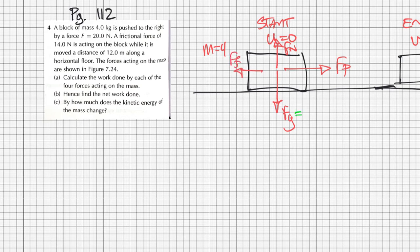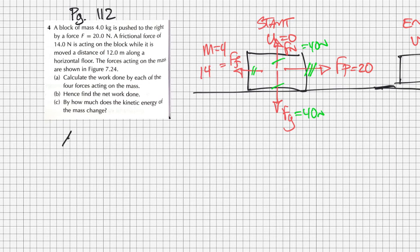The force of gravity would be basically 40 newtons. The normal force would also be 40 newtons — those two forces have to cancel out. There are no other forces in the Y direction, and the block is moving horizontally, so the net force in the Y direction has to be zero. The pull force is going to be bigger than the frictional force: the push is 20 newtons and friction is 14 newtons.